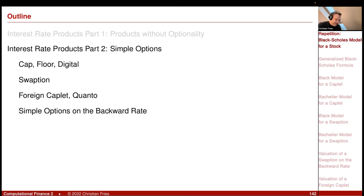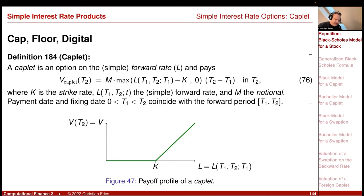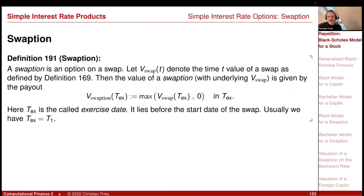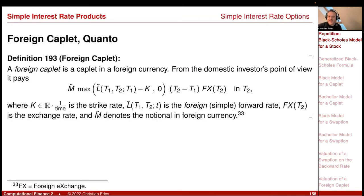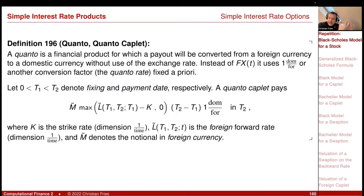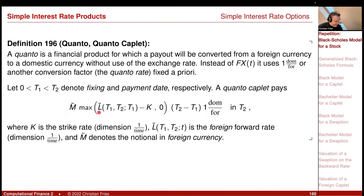In our collection we saw the Caplet, which is like a call option on the forward rate, and the digital Caplet. Then we had the Swaption, which is an option on a swap — an option on the value observed at the exercise date. We also looked at foreign currency products: the foreign Caplet, a Caplet on the foreign market with payoff converted to domestic currency, and the Quanto Caplet, where the payoff of a foreign Caplet is paid in the home currency.